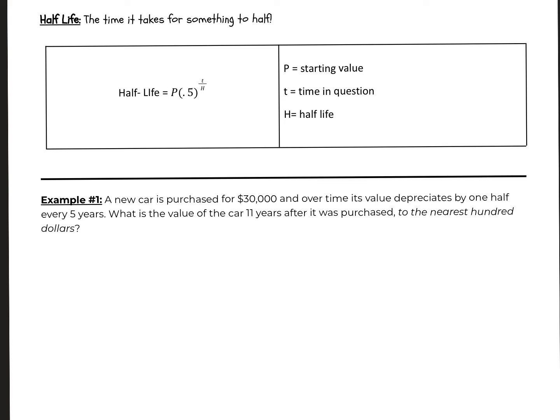It says a new car is purchased for $30,000. The $30,000 is your purchase price, and since the purchase price is what we are starting with, we're going to say that $30,000 is my P.